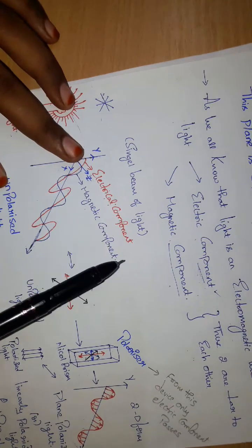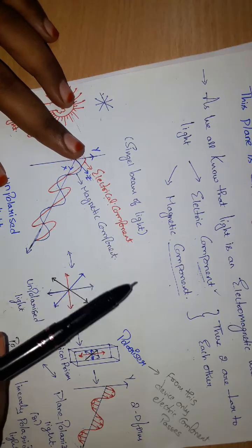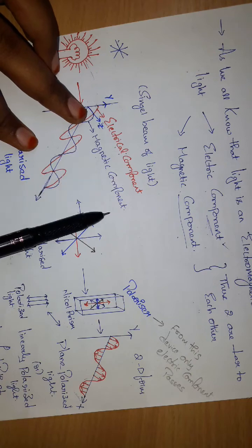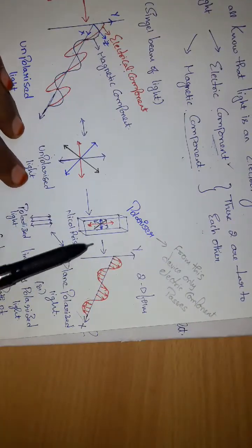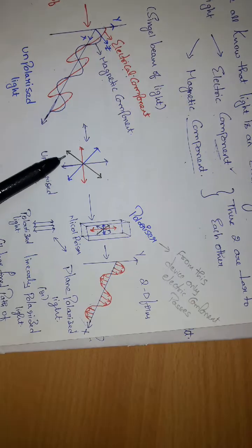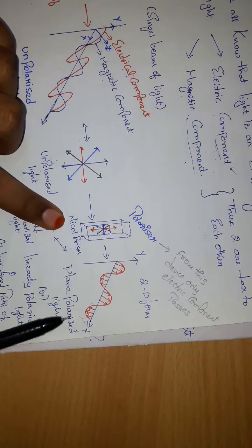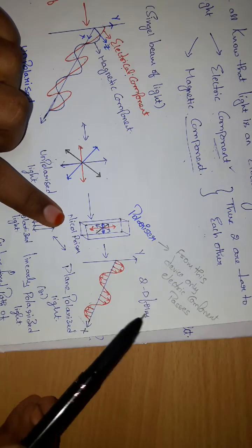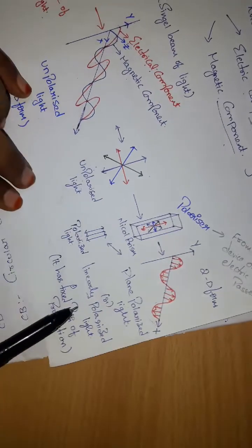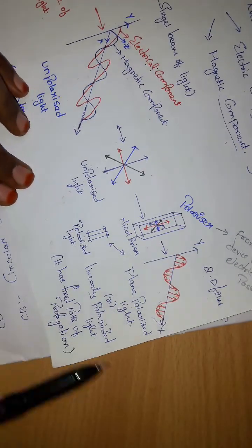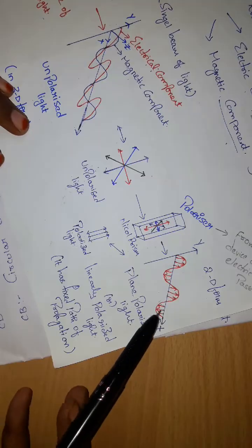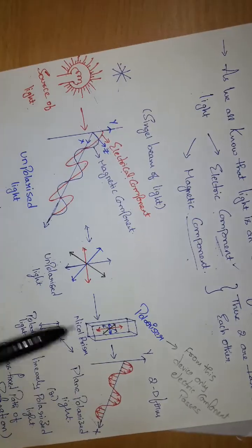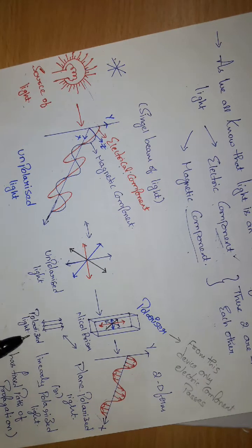The electrical component is more beneficial for spectral analysis, so we consider only the electrical component and neglect the magnetic component. After unpolarized light is passed through a polarizer, we get plane polarized light in 2D form — only the electrical component. This is also known as plane polarized light or linearly polarized light, and it has a fixed path of propagation.